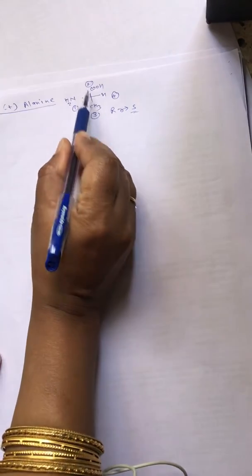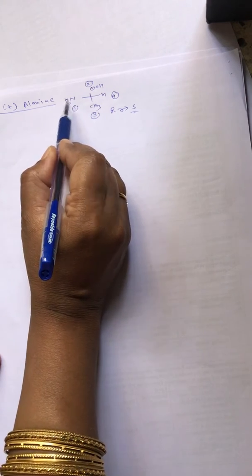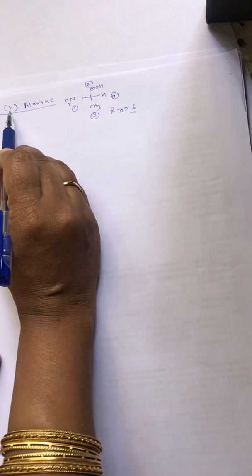It's L because when you write the vertical chain, the NH2 group is on the left-hand side, and it is a dextrorotatory compound.